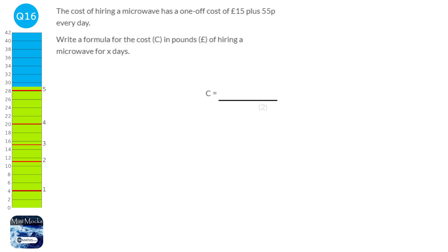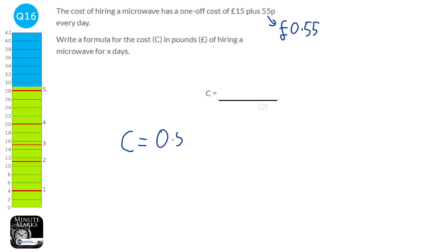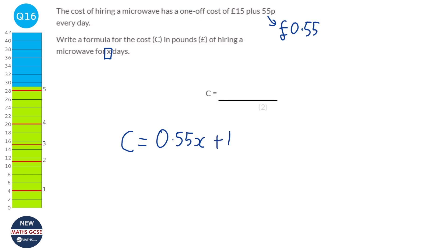We need a formula for the cost C in pounds of hiring a microwave for x days. It costs 55 pence per day, which in pounds is 0.55, so the daily cost part is 0.55x. There is also a one-off cost of 15 pounds. Therefore the formula is C = 0.55x + 15.